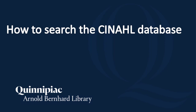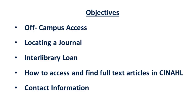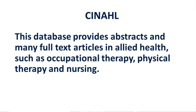Welcome. This is a tutorial from the University Library's website on how to search the CINAHL database. In this tutorial, we will be going over how to get into the library's homepage from off-campus, how to find if the library owns a particular journal, interlibrary loan, how to access and find full-text articles in the CINAHL database, and contact information. CINAHL stands for the Cumulative Index of Nursing and Allied Health. This database provides abstracts and many full-text articles in Allied Health, such as occupational therapy, physical therapy, and nursing.